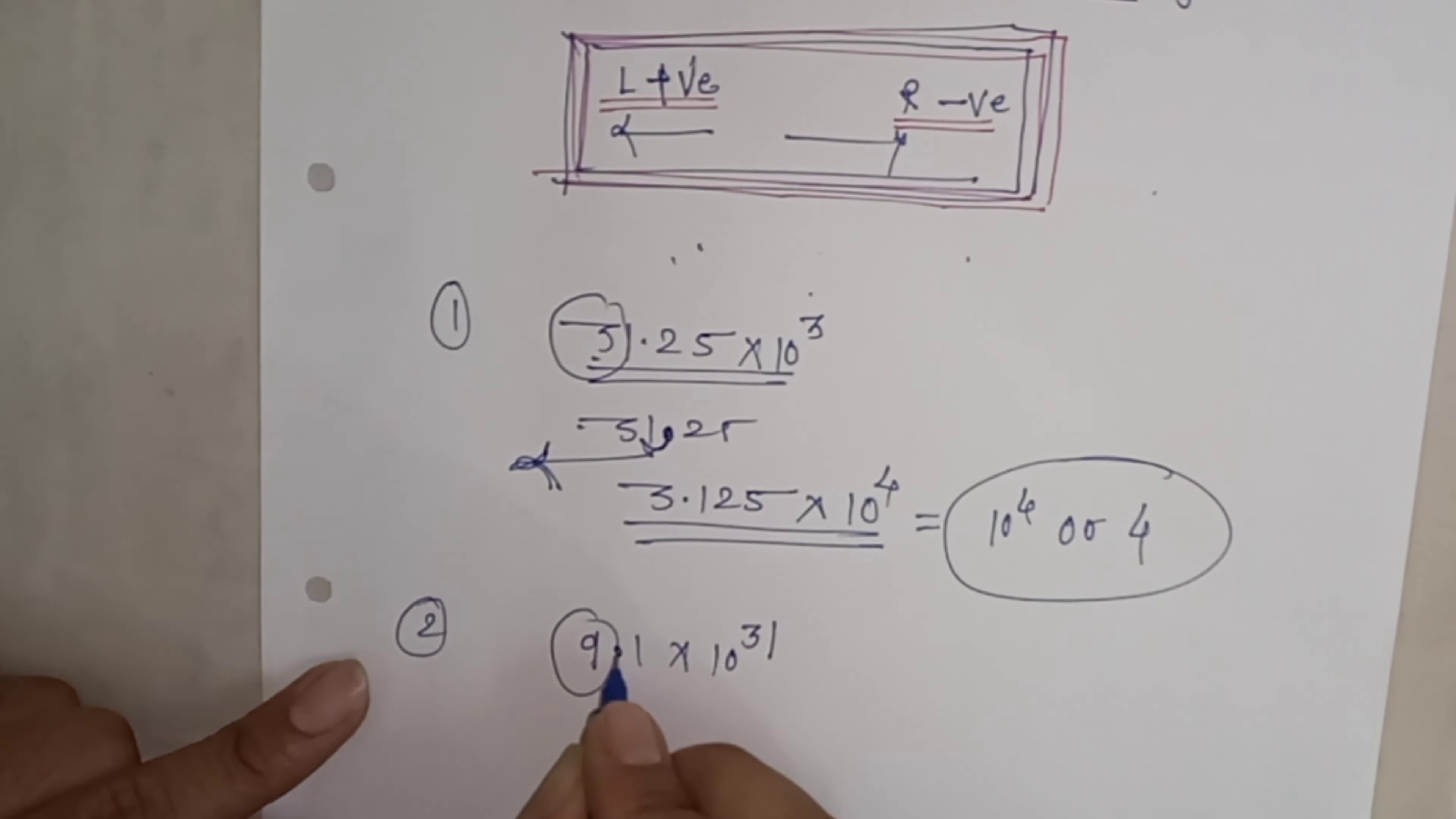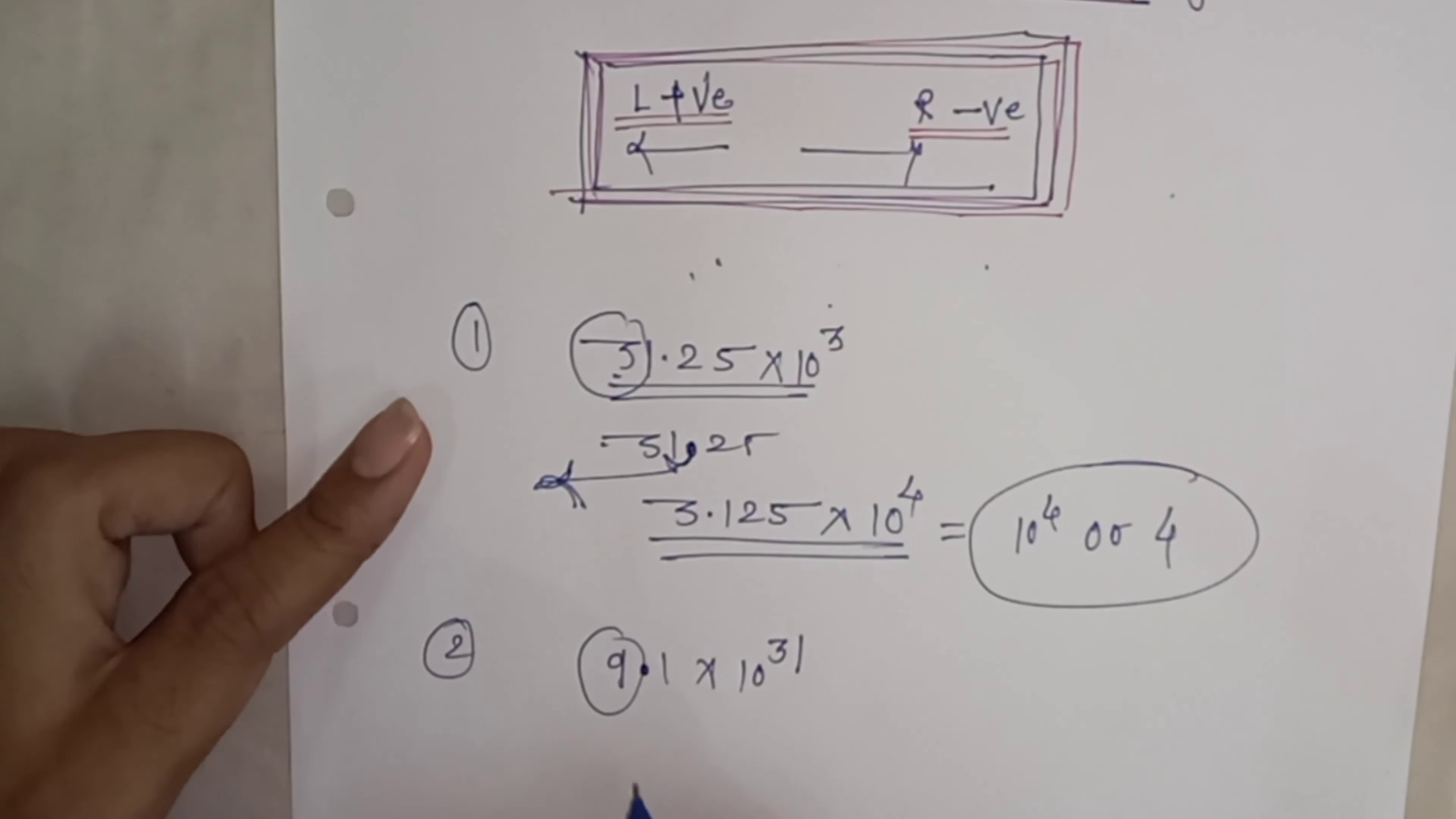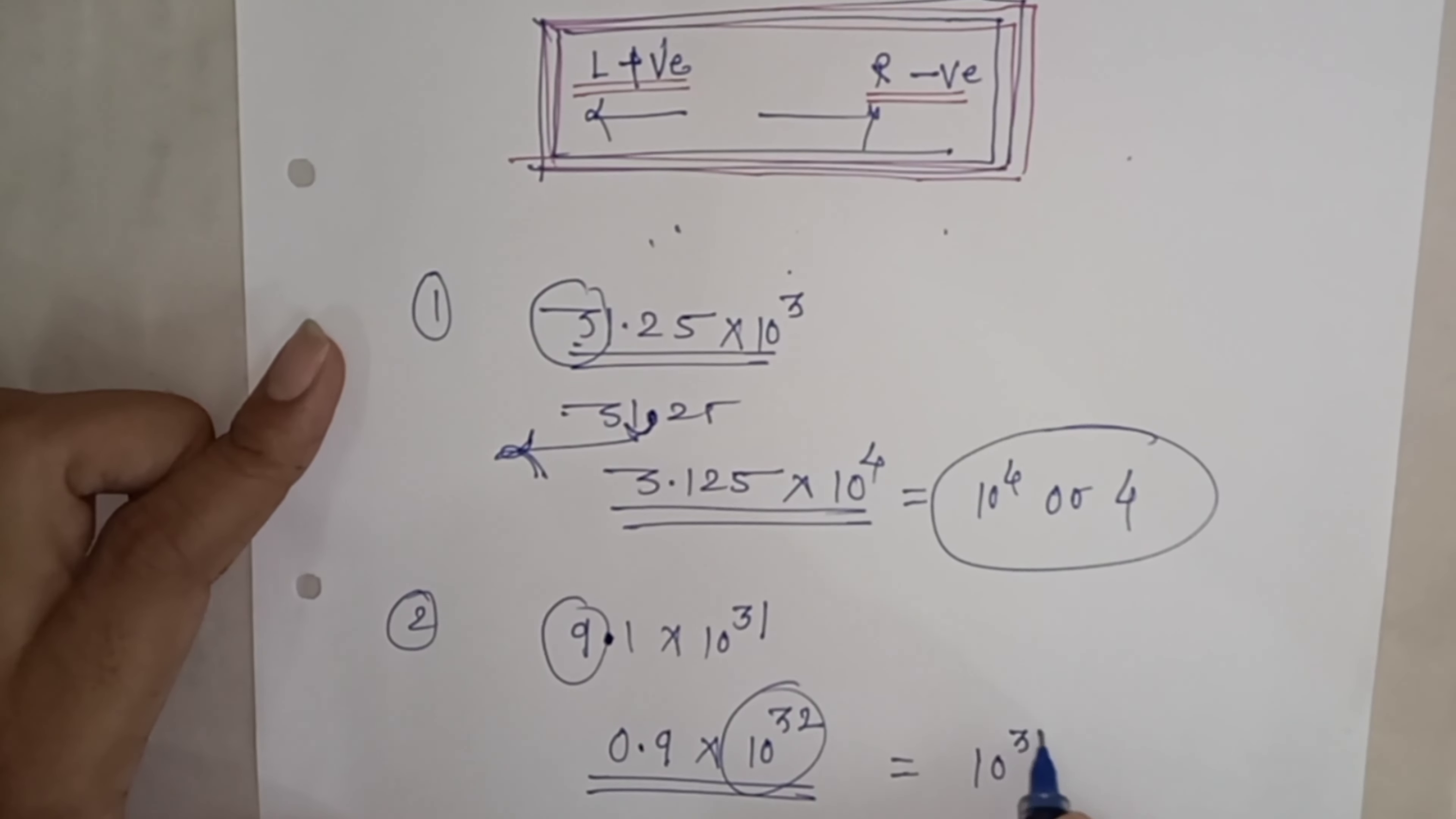Second condition is between 5 to 9. As per the second condition, if the first digit is between 5 to 9, then give the decimal before the first digit. So if we have 9, we make it 0.9. The concept is: when we move the decimal left, we add as per the rule. So 0.9 × 10³² gives us order of magnitude 10³² or just 32.